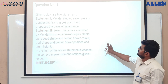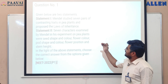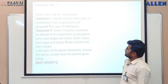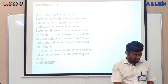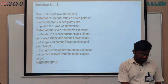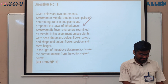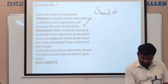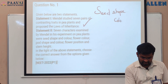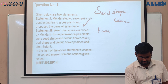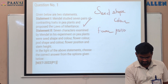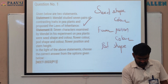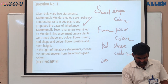The given question is about Mendel's experiments, which were done on Pisum sativum. Mendel studied seven pairs of contrasting traits in pea plants and proposed the laws of inheritance. Statement one is true. Statement two lists the seven characters examined by Mendel: seed shape, seed color, flower position, flower color, pod shape, pod color, and stem height.